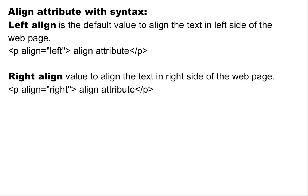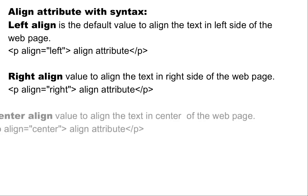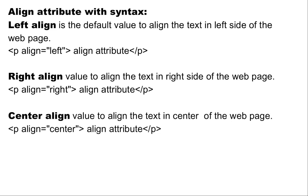Next is right align. Right align value is used to align the text to the right side of the webpage. The syntax is: open the p tag, 'align' is the attribute, and 'right' is the value of the attribute, then some content, and close the p tag.